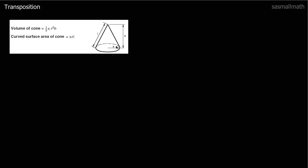Now let's look at this other formula: the curved surface area of a cone — just the sloping side, not the base — is given by pi times the radius times the sloping length l. Supposing we had to find the radius, given the sloping length and the curved surface area. The curved surface area equals pi r l. The r is being multiplied by pi and by l, so we move the whole lot to get r equals the curved surface area divided by pi l.